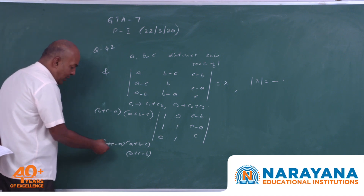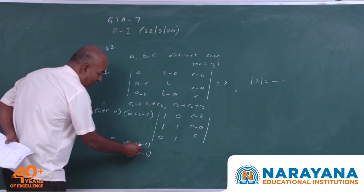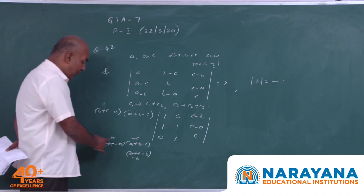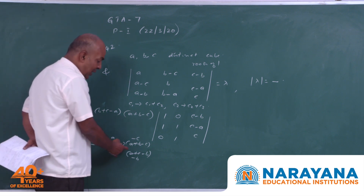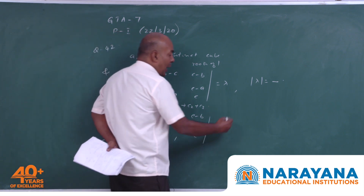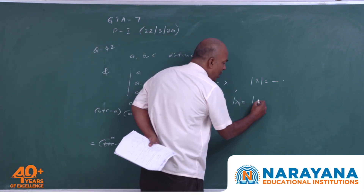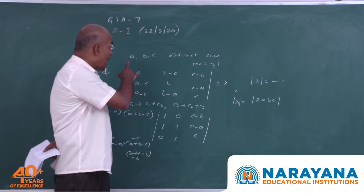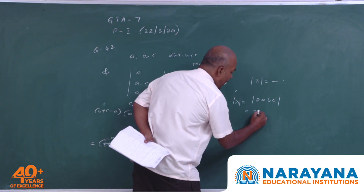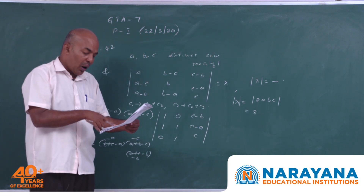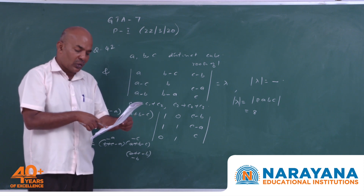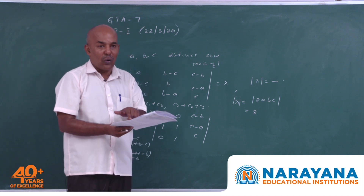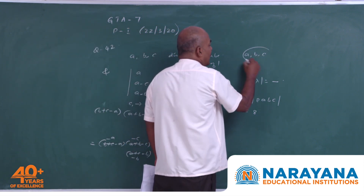Since A + B + C = 0 (cube roots of unity), we substitute: B+C = −A, A+B = −C, A+C = −B. So the product becomes (−2A)(−2C)(−2B) = −8ABC. Since ABC = 1 (product of cube roots of 1), |λ| = 8. As mod λ equals 8, it is greater than 0, 2, and 4. The correct answer is A, B, C.